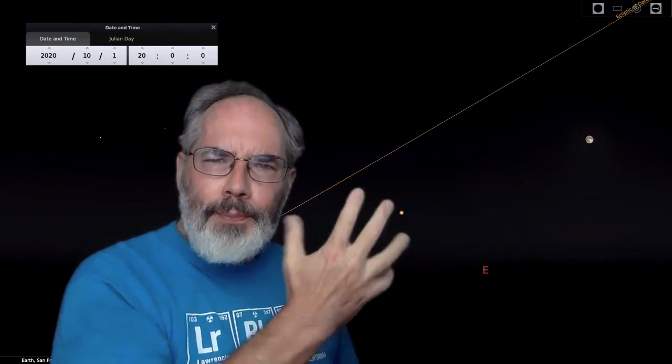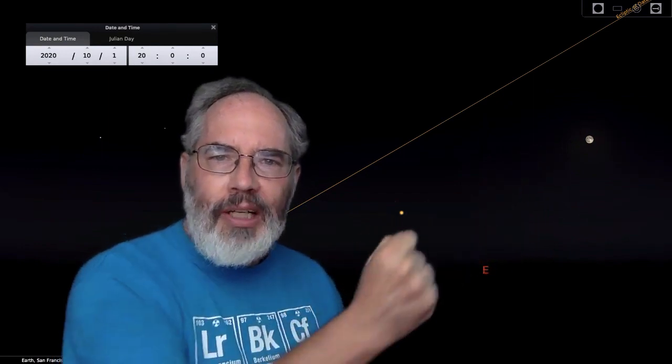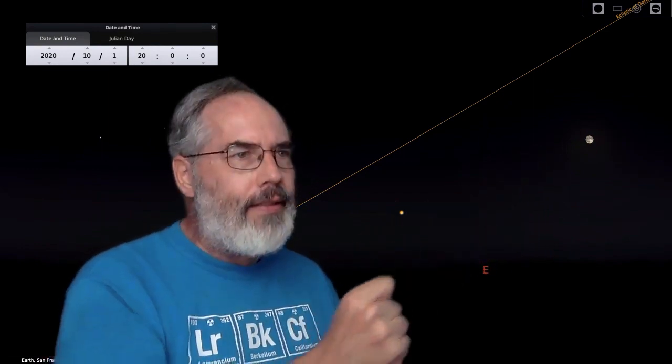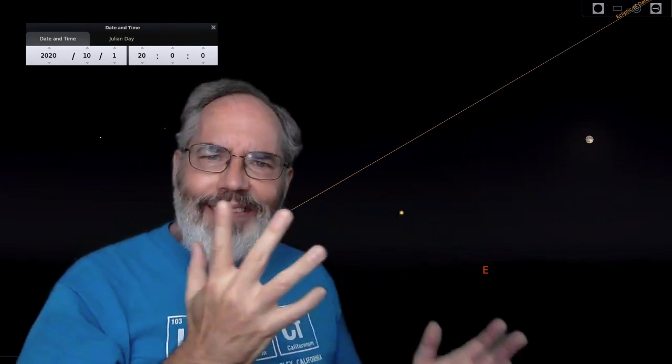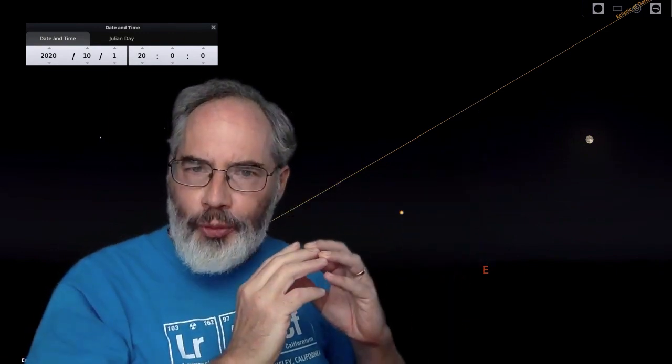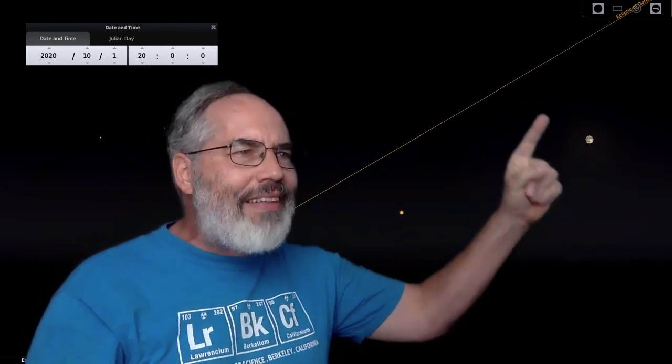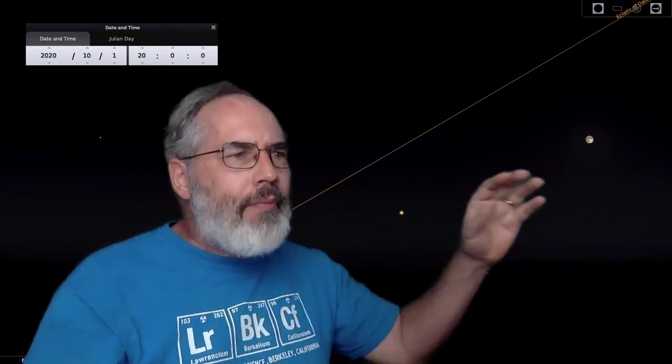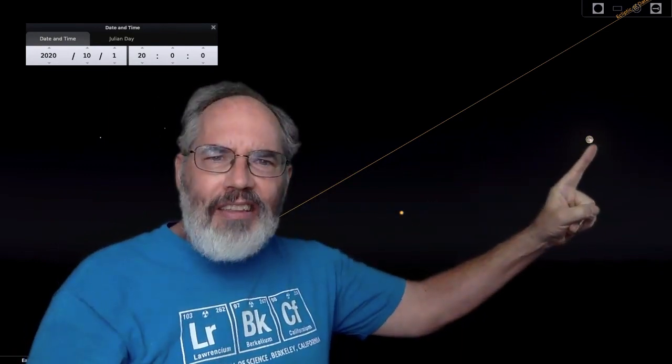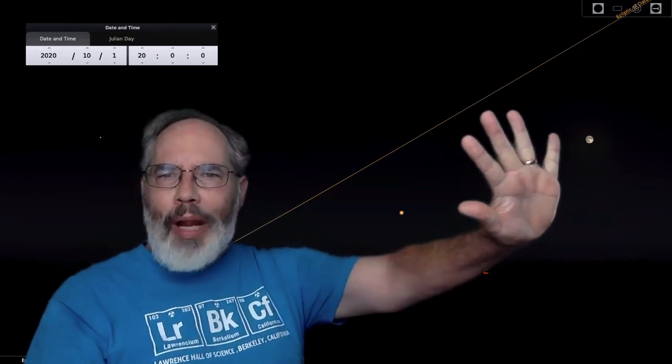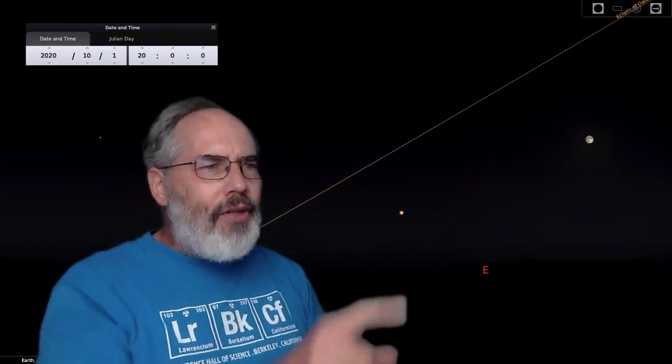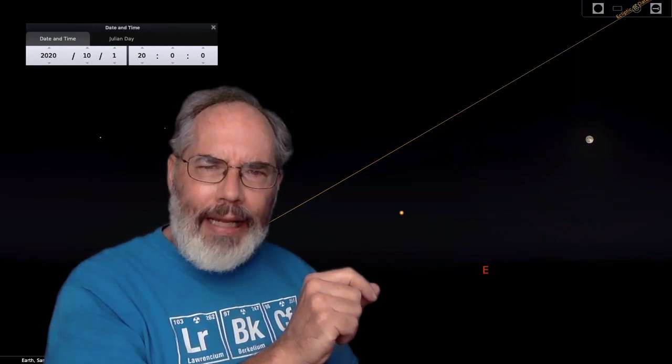Now I want to predict where the harvest moon is going to be the next night. The line here is called the ecliptic, and it shows the path that the sun seems to take against the background of stars as the year goes by. The moon tracks the same path roughly. If the moon is here on the 1st of October, it might move about a hand's width each night. So where's it going to be the next night?